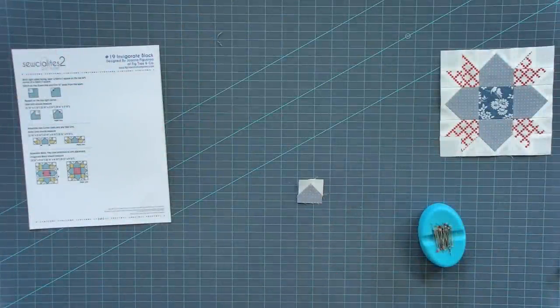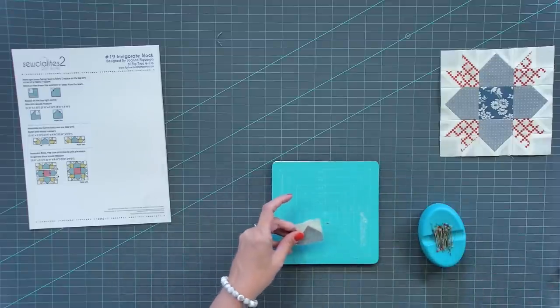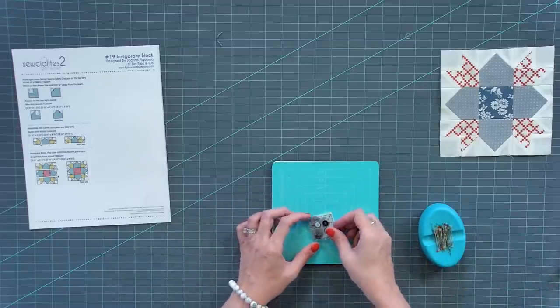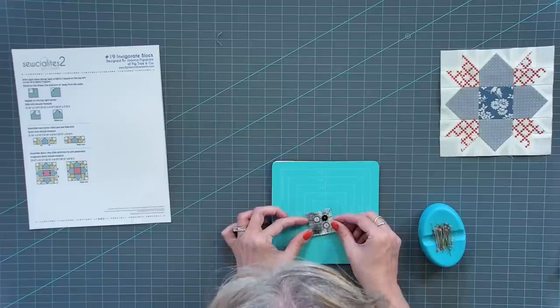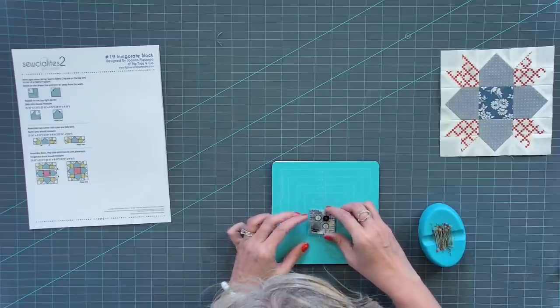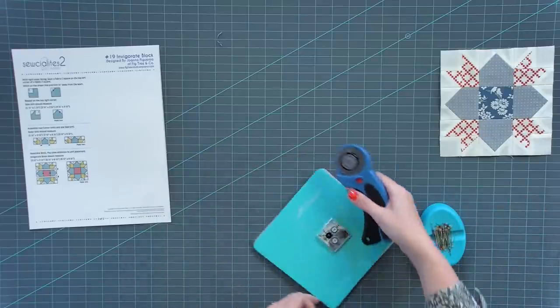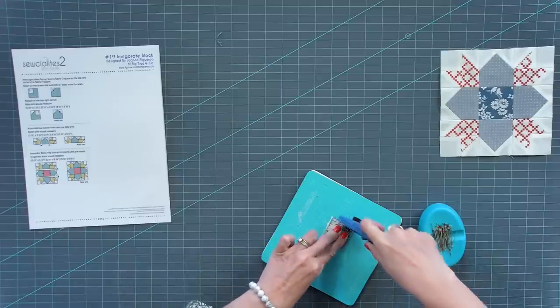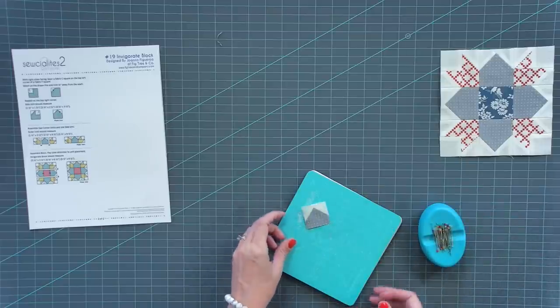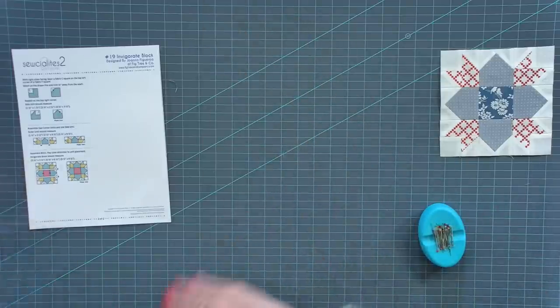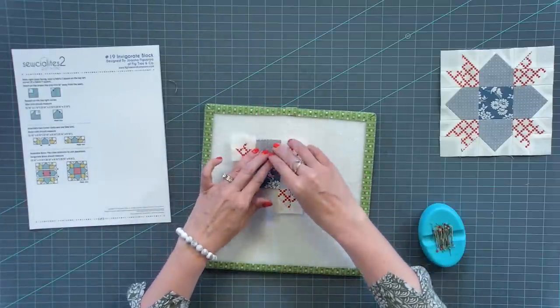This should be one and a half by one and a half. This is why I wanted that one and a half inch ruler so bad. I'm gonna put this ruler on here and trim. Now my block is exactly one and a half. You're gonna actually be shocked how much you use that one and a half inch ruler. I basically begged and pleaded to have that ruler.